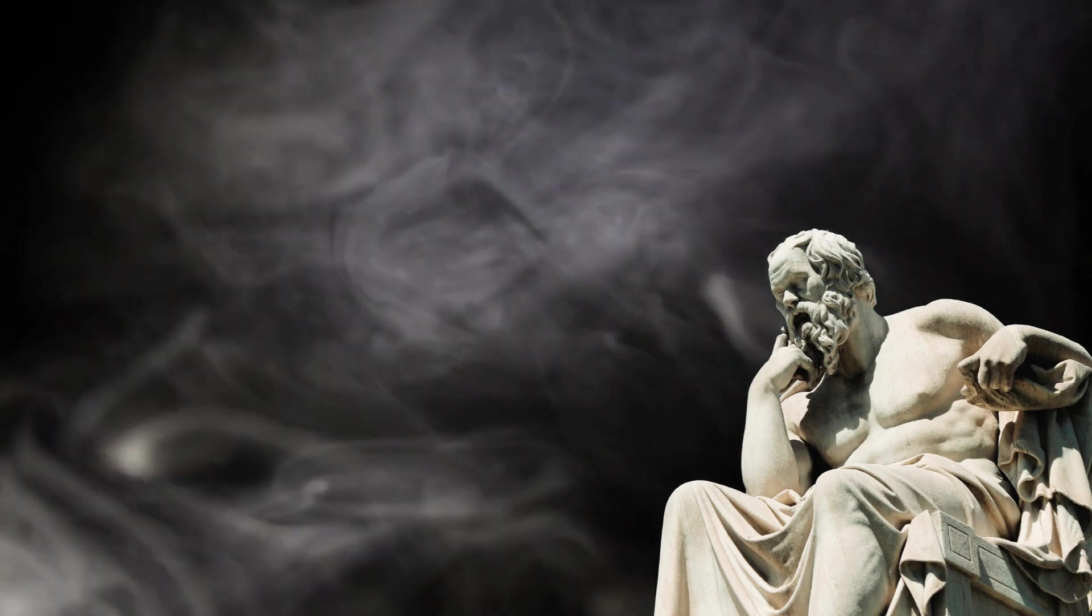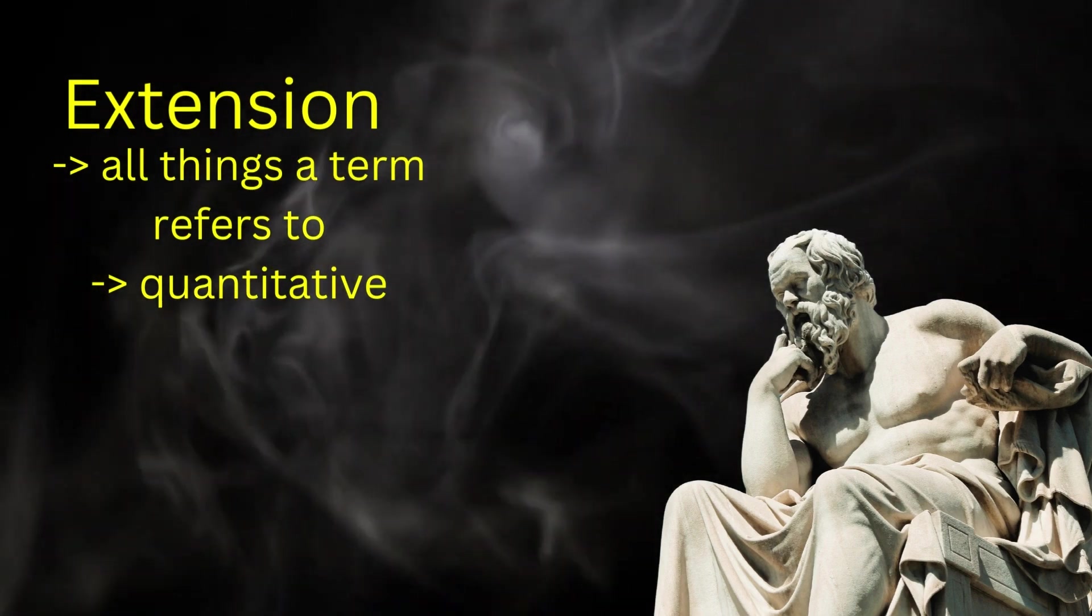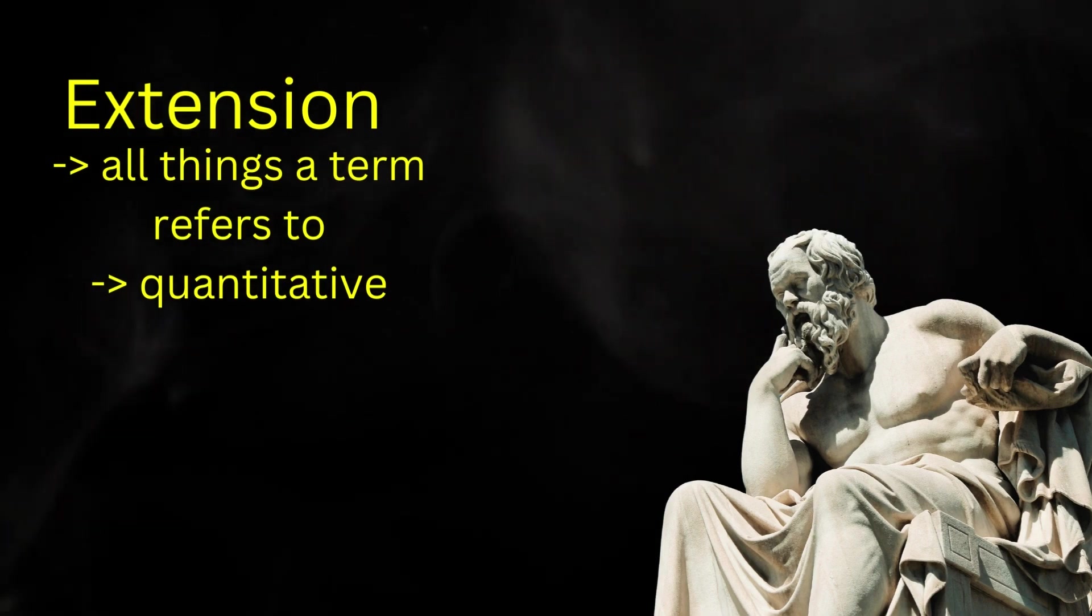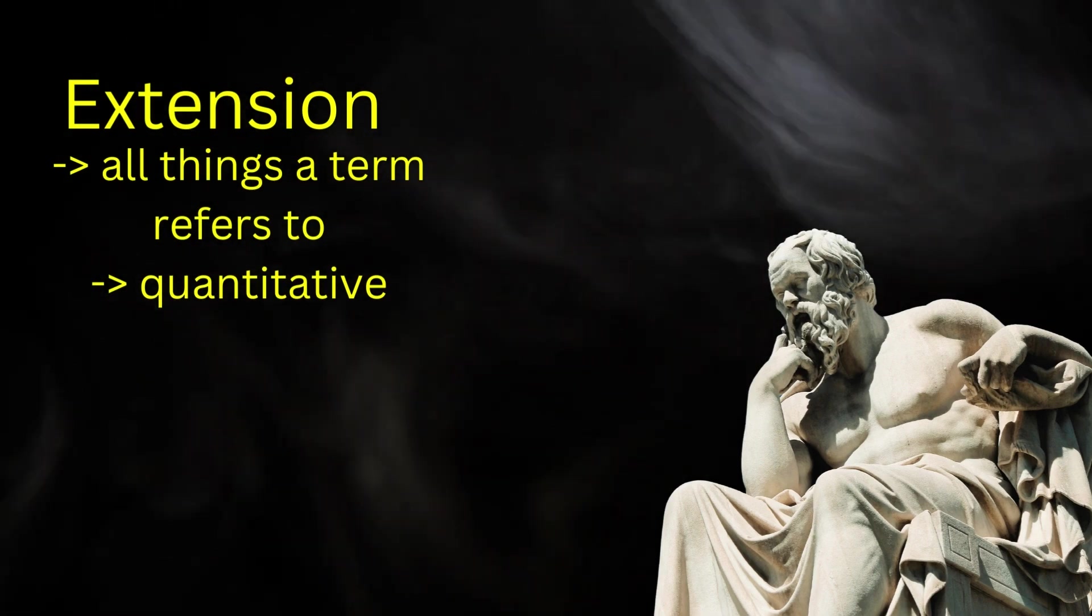Let's now talk about extension and comprehension of terms. Every term has extension and comprehension. Extension is all the real things a term refers to. For example, the extension of the term apple refers to all real apples. Extension is quantitative, since it expresses the number of things to which the term refers.